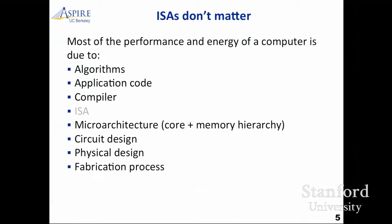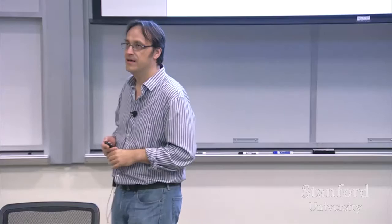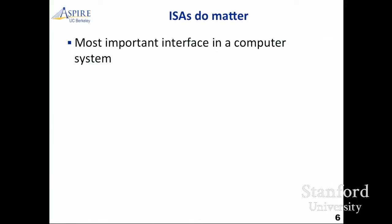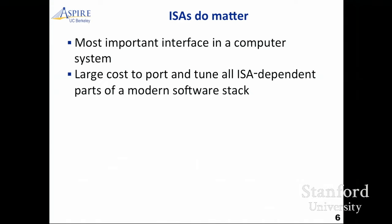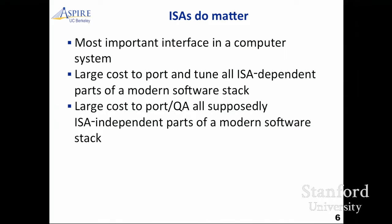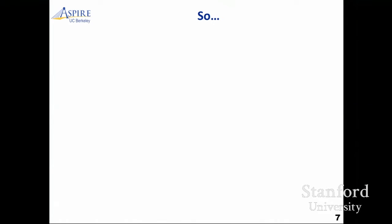So some people wonder: why do we care about the ISA anymore? The reason ISAs do matter is that it's the most important interface in a computer system — it's where hardware meets software. There's a massive cost to port and tune all the ISA-dependent parts of a software stack. Just one small example: ARMv8 still doesn't have a very effective JVM. And there's the large cost of porting, tuning, and quality-assuring all the stuff that's supposed to be ISA-independent, but turns out it isn't because all the other stuff usually has ISA-dependent bugs in that port.